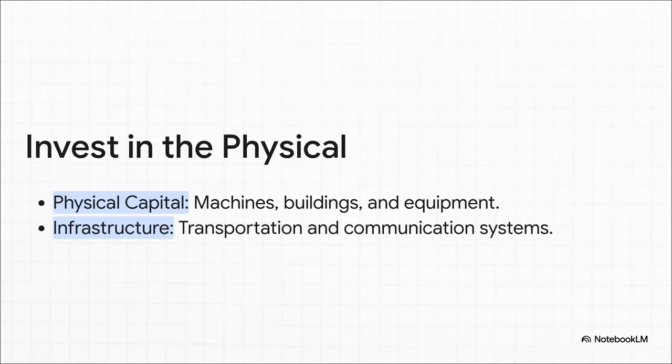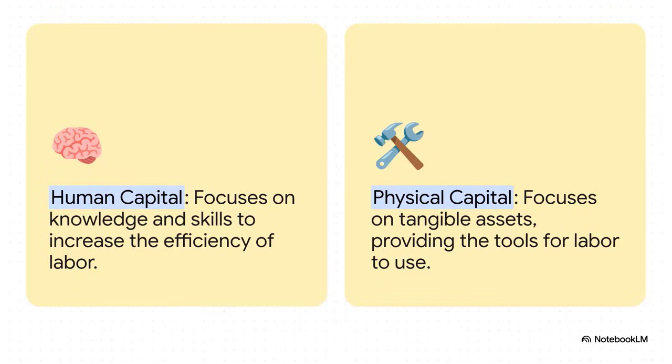Then you've got infrastructure. Think of this as the veins and arteries of the economy. The roads, the ports, the power grid, and of course, the internet. It's all the stuff that connects everything and everyone, letting business happen smoothly. Okay, but here's the really crucial part. These two things, investing in people and investing in stuff, they're not separate. They're totally connected. Think about it. Investing in human capital, in people, makes them more efficient. But investing in physical capital gives those smarter people way better tools to work with. It's like a one-two punch. You really need both for it to have a massive impact. One without the other just doesn't pack the same power.